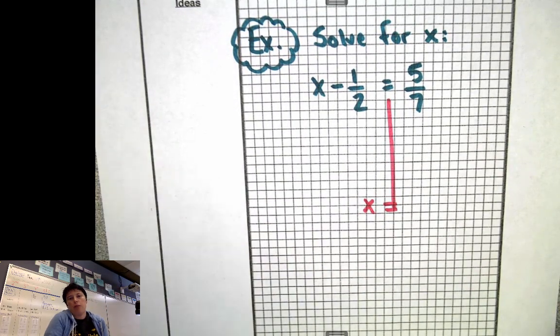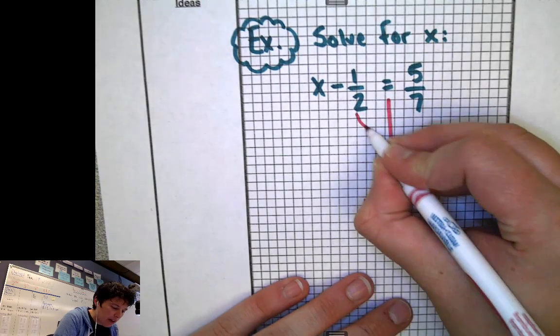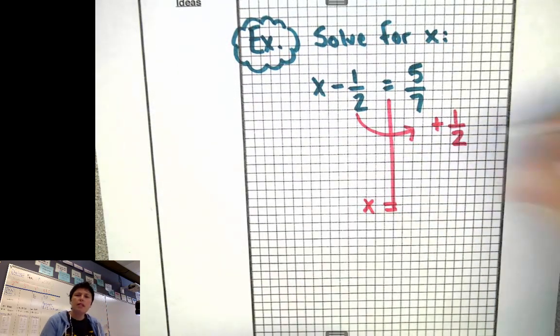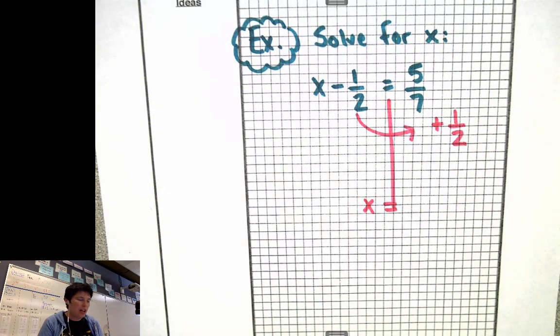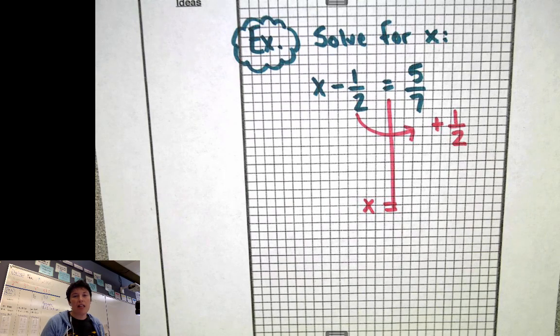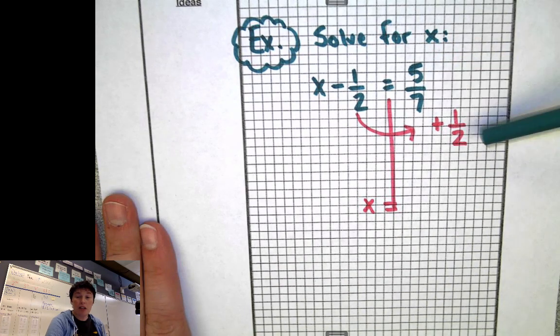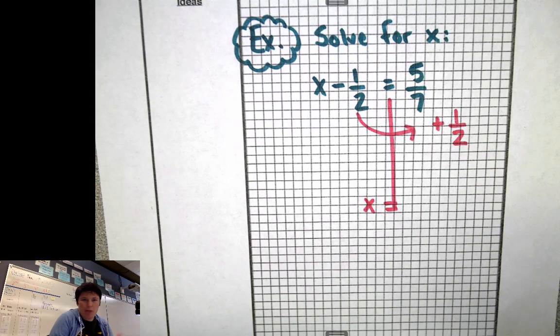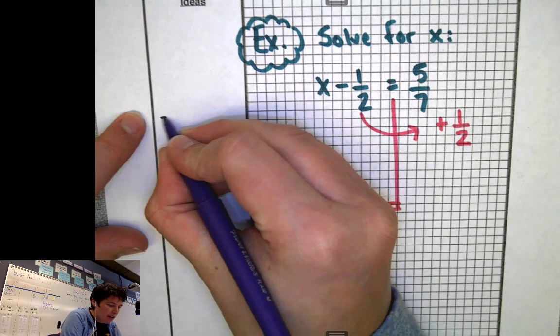So what do we need to get away from the x? We need to get rid of the minus a half. We need to flip the minus one half over and make it a positive plus one half. But then this is where it gets tough. This is the challenge. Now we've got to deal with fractions. Five sevenths plus a half is not easy math to do. So I kind of need some more space. I'm going to go do that on the side over here.